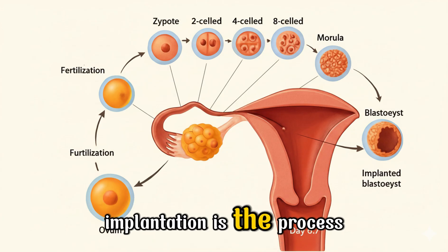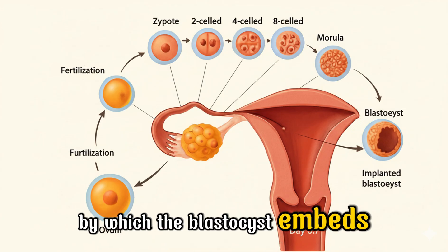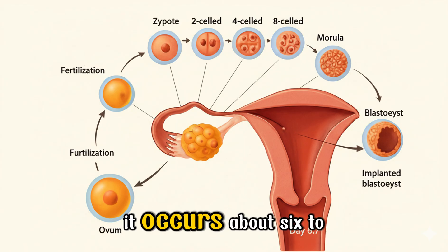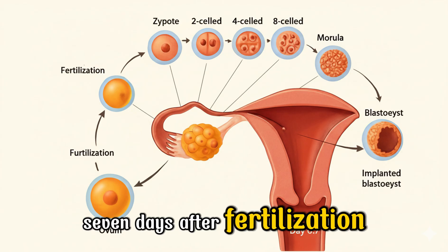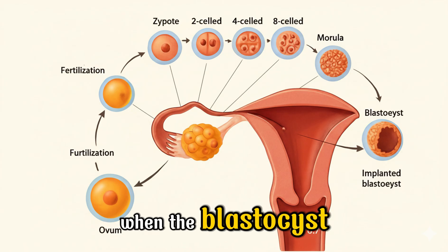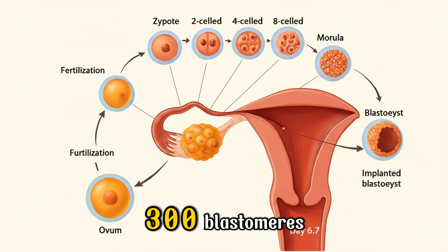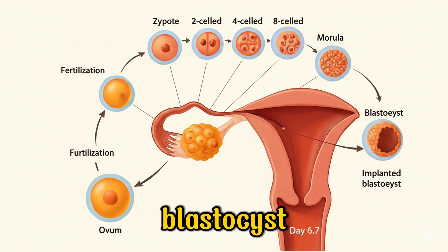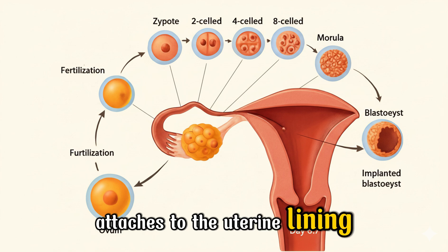Implantation is the process by which the blastocyst embeds into the endometrium to establish pregnancy. It occurs about six to seven days after fertilization, when the blastocyst — made of roughly 200 to 300 blastomeres and containing a fluid-filled blastocele — attaches to the uterine lining.